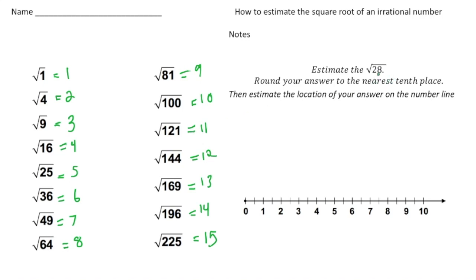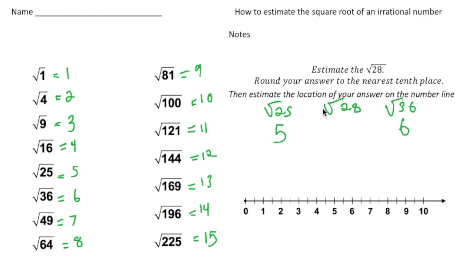So we want to estimate the square root of 28. I know it's going to be between the square root of 25 and the square root of 36, so let's write that down. The square root of 25 is 5, and the square root of 36 is 6. Now, 28 is a little bit closer to 25 than it is to 36 — it's 3 away from 25 and 8 away from 36. So I'm going to come up with an answer of around 5.2.